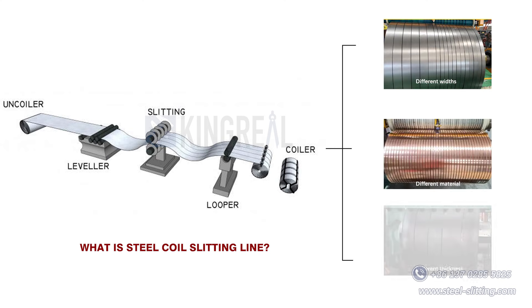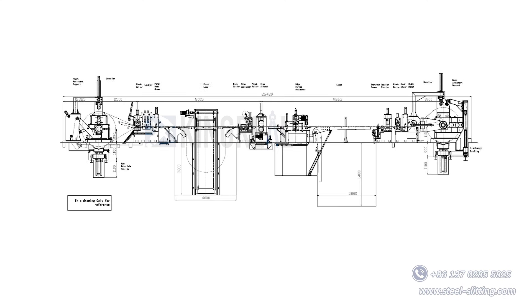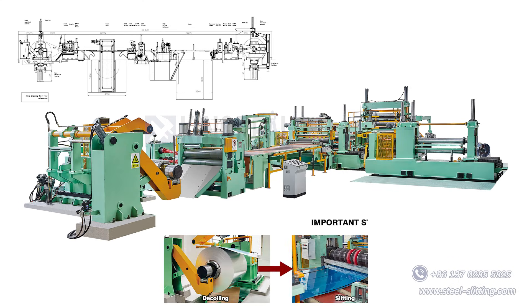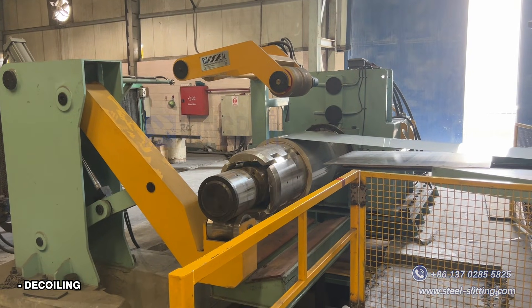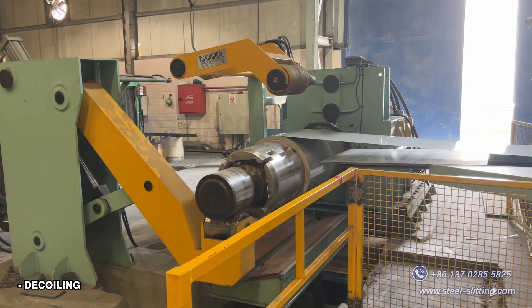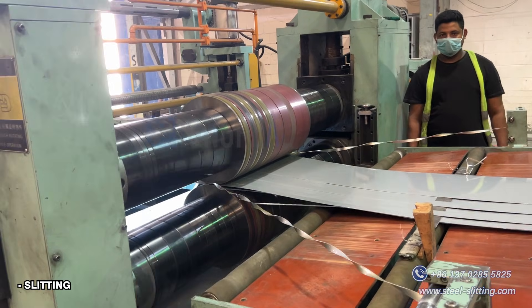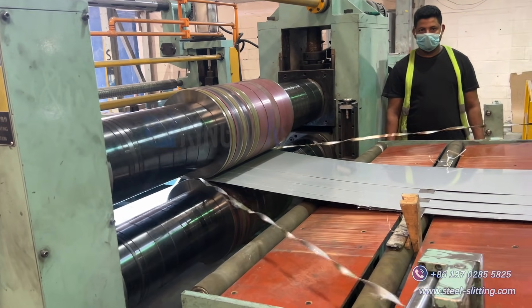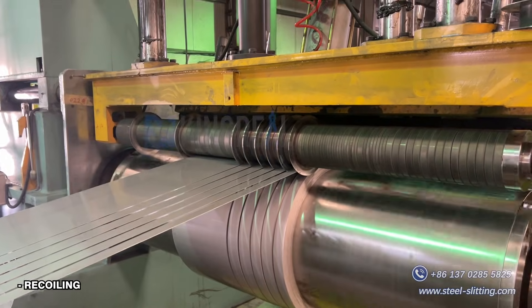Coil slitting machine line is used to slit metal coils of different materials from wider coils to smaller width coils. Various industries have different requirements for the width of steel strip, and the coil slitting machine can accurately split wide steel coils into narrower strips that meet the customer's needs for use in downstream manufacturing.